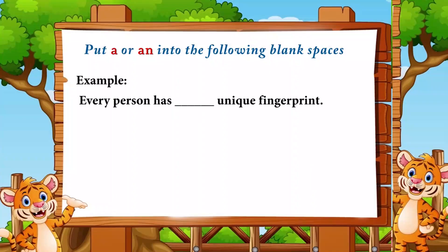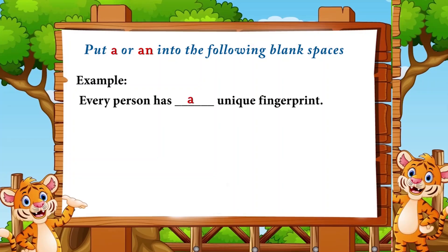Now do the following exercise: put 'a' or 'an' into the blank spaces. Example: 'Every person has ___ unique fingerprint.' The answer is 'a' — 'every person has a unique fingerprint' — because 'unique' begins with the consonant sound 'y.'